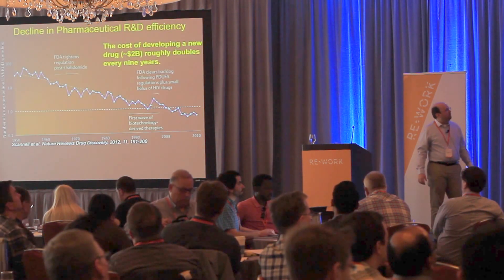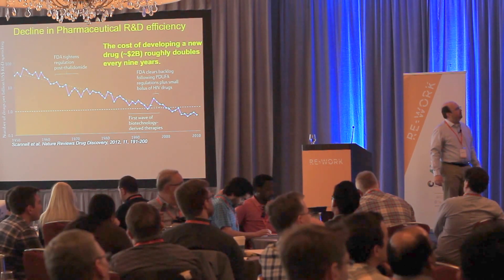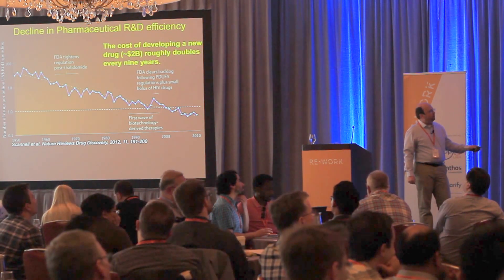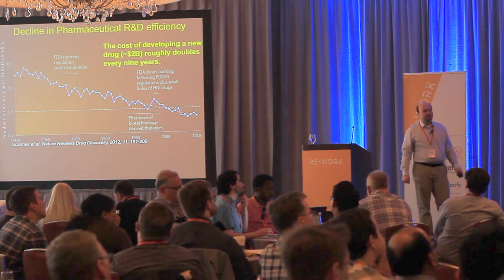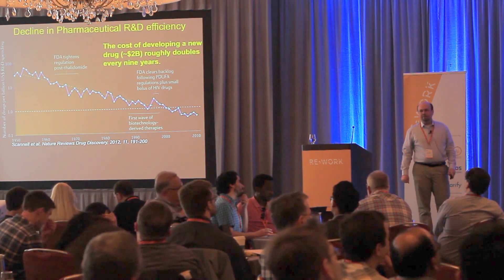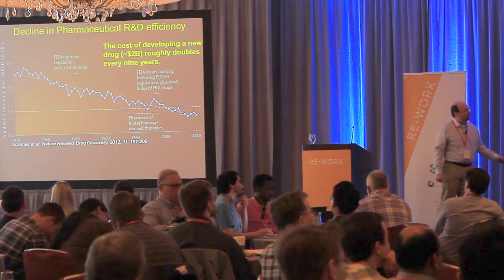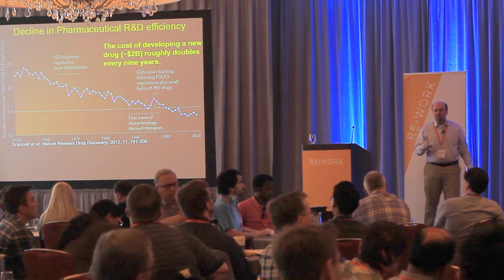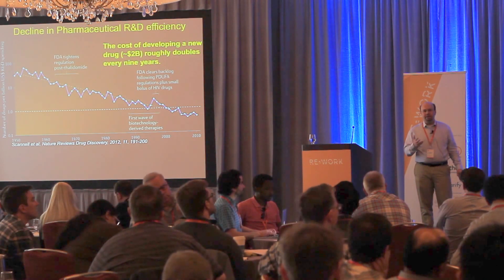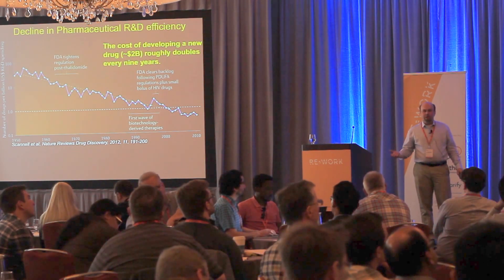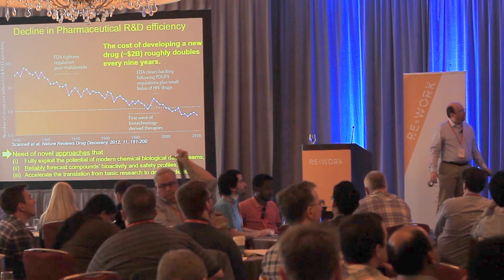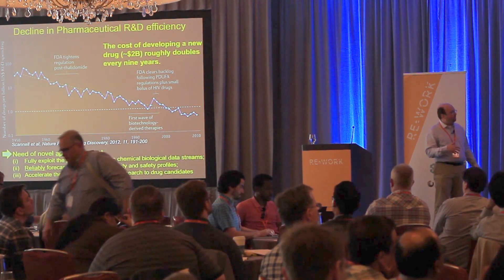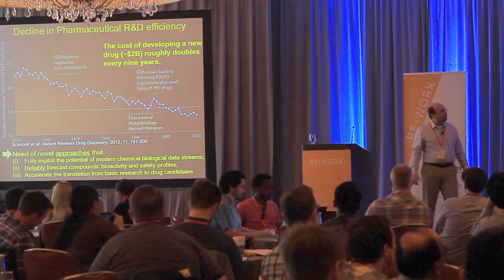What has motivated us quite strongly is a rather depressing trend: a decline in pharmaceutical R&D efficiency. The graph shows the number of drugs brought to market per billion dollars of R&D spending. For the past 60 years there has been a steady linear decline in the number of drugs per dollar spent. If you extrapolate this graph 20 or so years forward, even the biggest pharma companies won't have enough money to bring a new drug to market. The goal of our work is to find new data-driven methods that would mitigate this trend using data mining and machine learning.